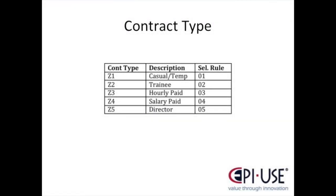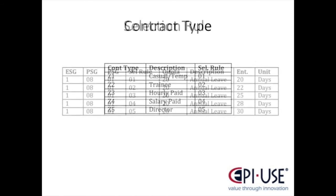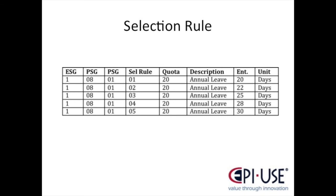In this example, I'm using contract type in infotype 16 to define the selection rule for absence quotas in feature QUOMO. I have contract types Z1 through to Z5 representing casual temps, trainees, hourly, salary paid, and director. These contract types are used to define the selection rule: Z1 gives selection rule 01, Z2 gives 02, and so on. This means hourly paid employees receive 25 days and salaried employees receive 28 days annual leave.